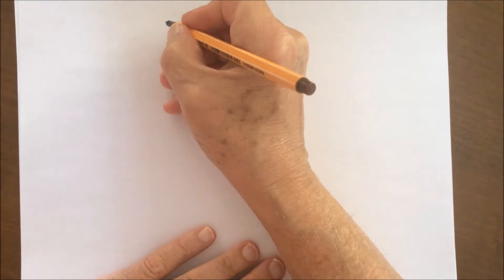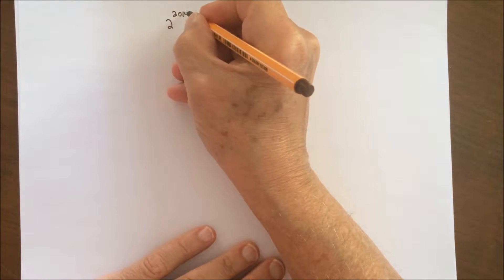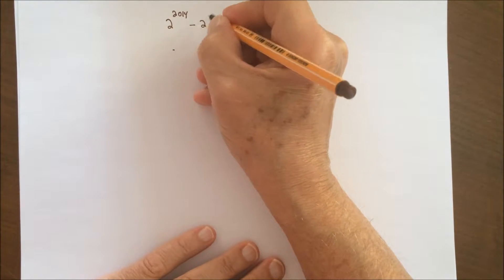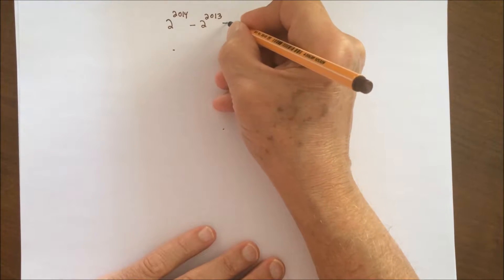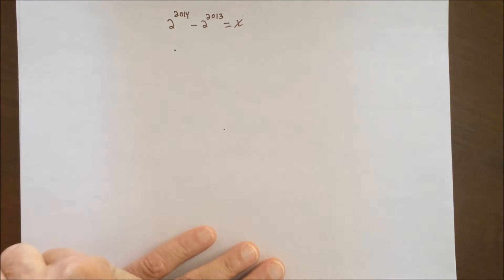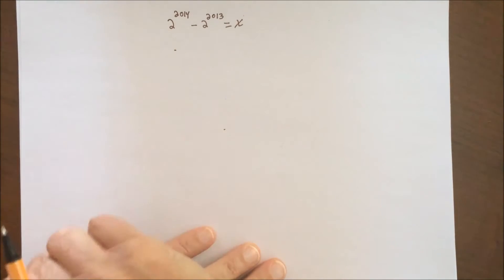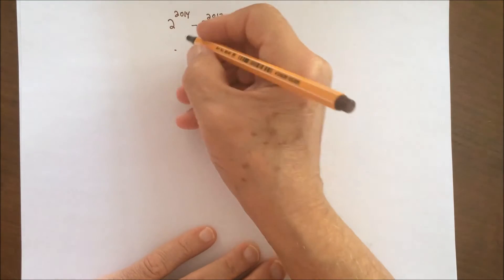Consider the following equation: 2 to the 2.014 power minus 2 to the 2.013 power equals x. We wish to solve this equation for the variable x. Consider the left-hand side of the equation — we can rewrite that as follows.